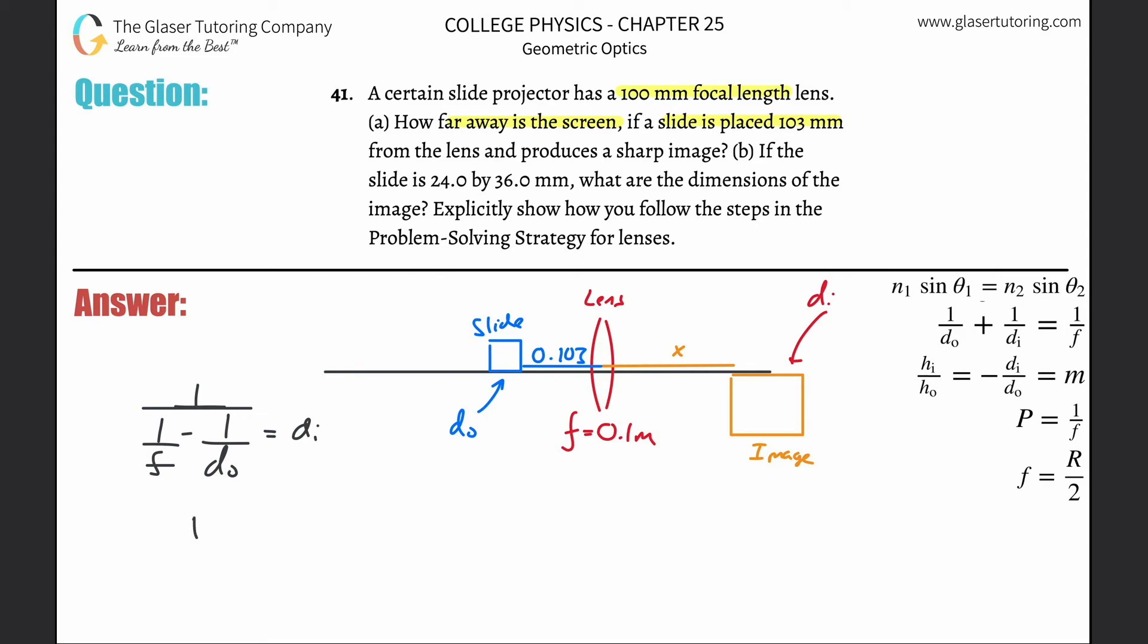This is then 1 divided by (1/f - 1/do), so that's 1/(0.1 - 1/0.103).